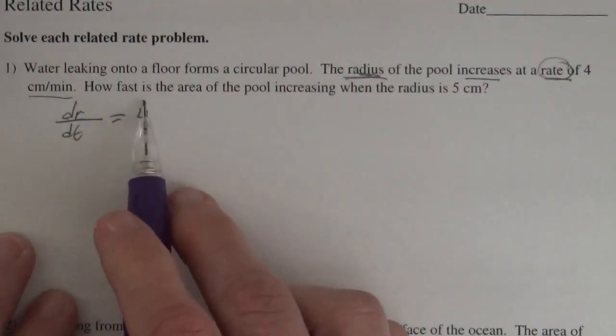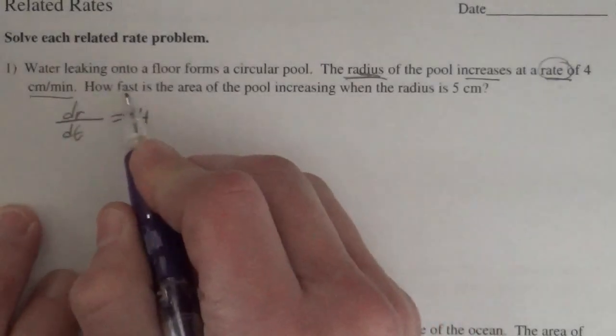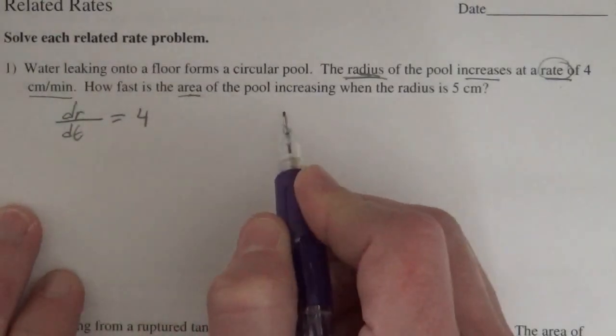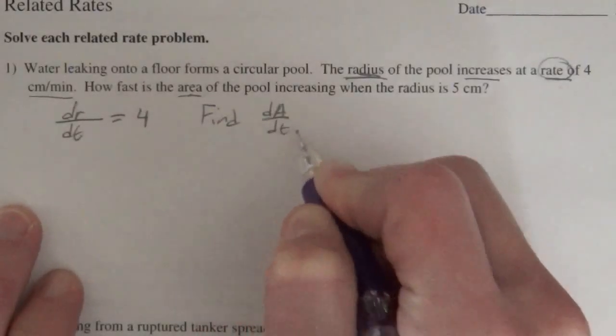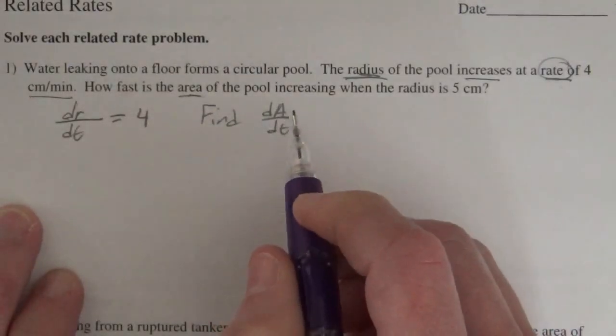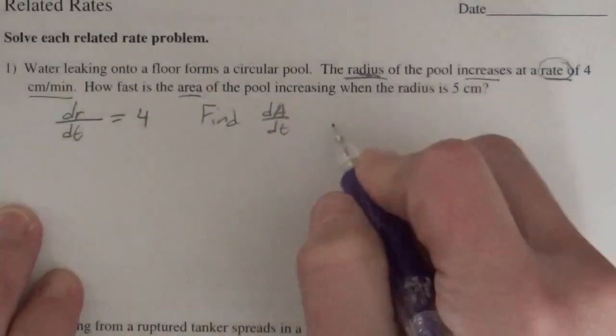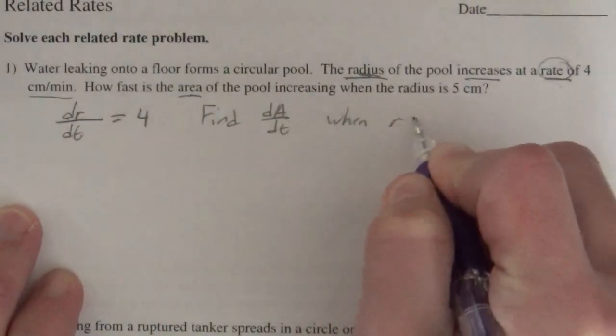And then they want to find how fast is the area changing. So they want to find the rate, dA/dt, of the area when the radius is 5.